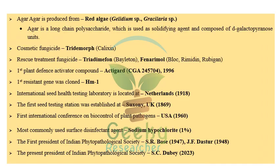Agar agar is produced from red algae — specifically Gelidium species or Gracilaria species. This question appeared in 2014, 2018, and 2019 NET papers. Agar agar is a long polysaccharide used as a solidifying agent, composed of D-galactopyranose units. Before agar agar, gelatin was used in laboratories, but some bacteria could digest gelatin, making it unsuitable.